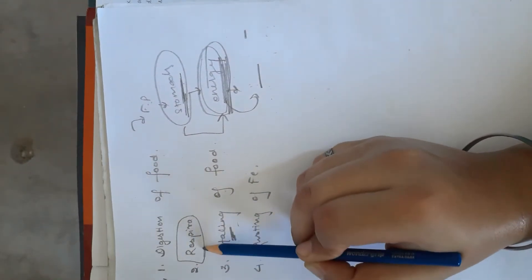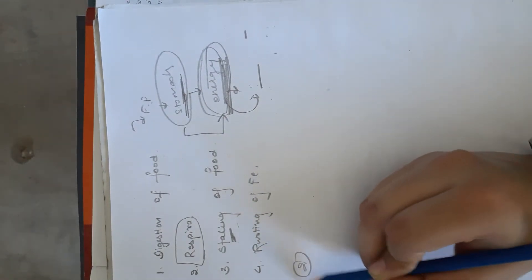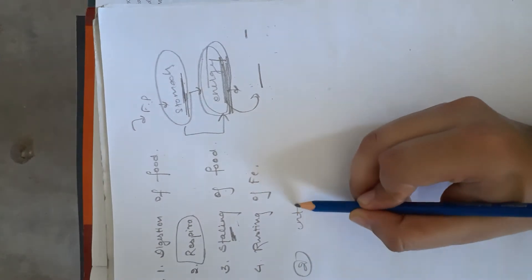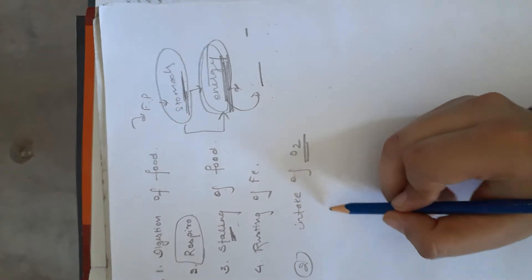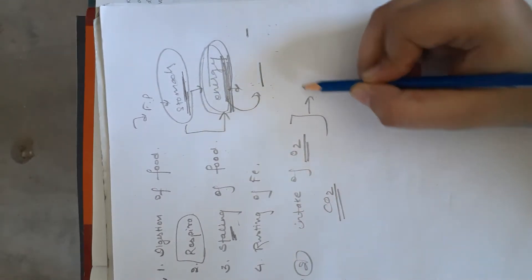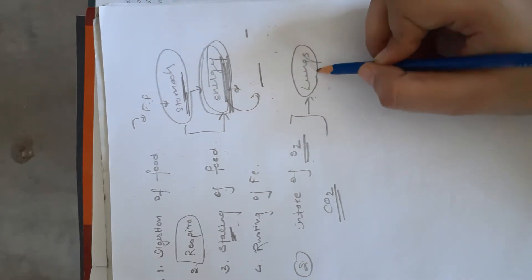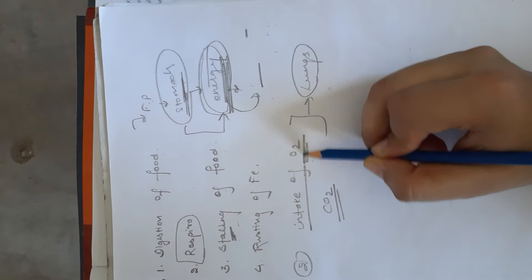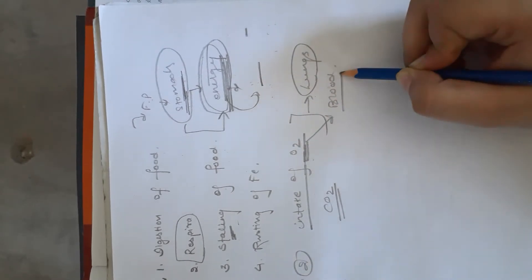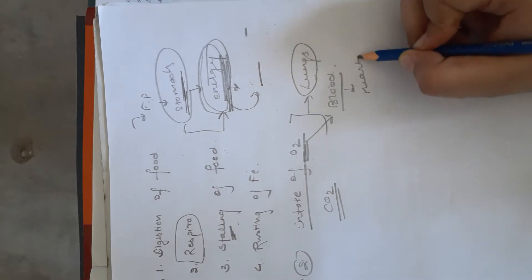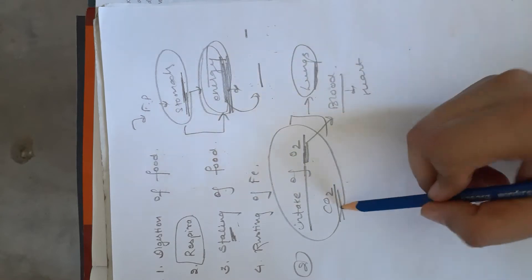Same as respiration. The process of respiration is our second example. We intake oxygen and release carbon dioxide. It happens in the lungs. With the help of intake of oxygen, it reaches the blood, through which it reaches the heart. Some kind of chemical reaction takes place in the lungs, through which we breathe.